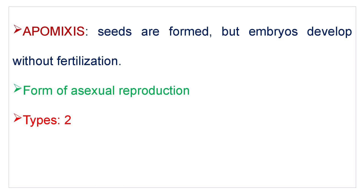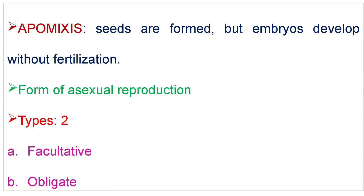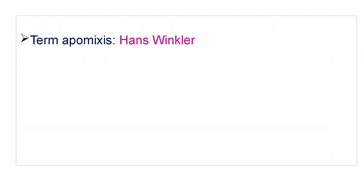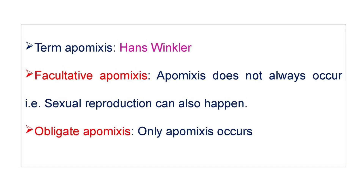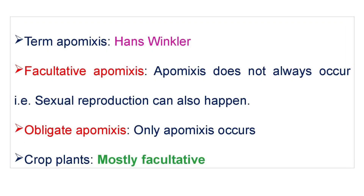Apomixis is of two types: the first is facultative Apomixis and the second is obligate Apomixis. The term Apomixis was coined by Hans Winkler. In facultative Apomixis, Apomixis does not always occur — that is, sexual reproduction can also happen. In obligate Apomixis, only Apomixis occurs. Most of the crop plants are facultative Apomixis.